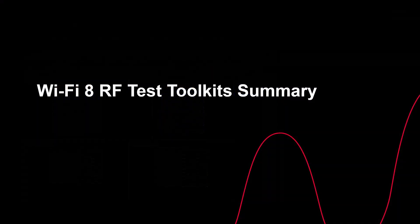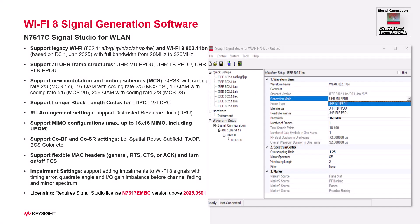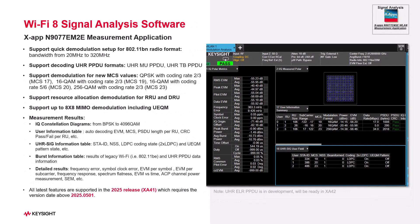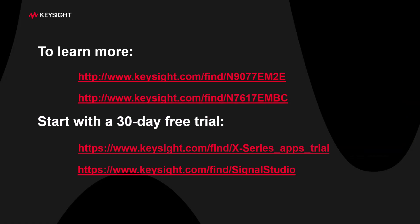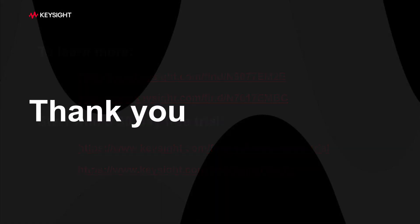To sum it up, Signal Studio N7617C lets you easily generate both Wi-Fi 8 and legacy Wi-Fi signals, covering almost all physical layer features. XApps 2025 provides detailed analysis and demodulation of Wi-Fi 8 and legacy Wi-Fi signals as well. Keysight is fully equipped to support Wi-Fi 8 RF testing today. To learn more and to download a free trial, visit us at the website shown. Thank you for watching.